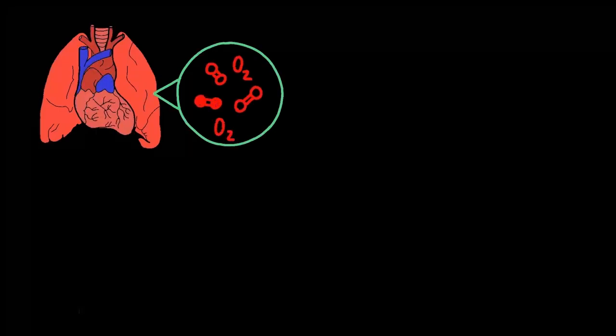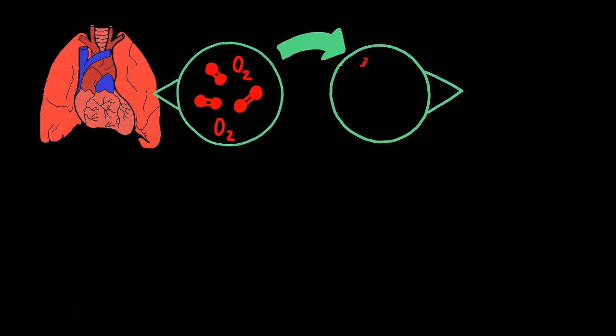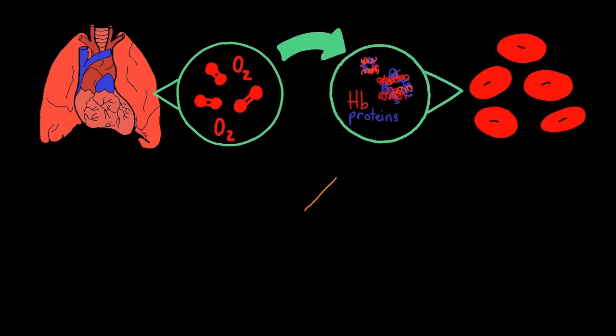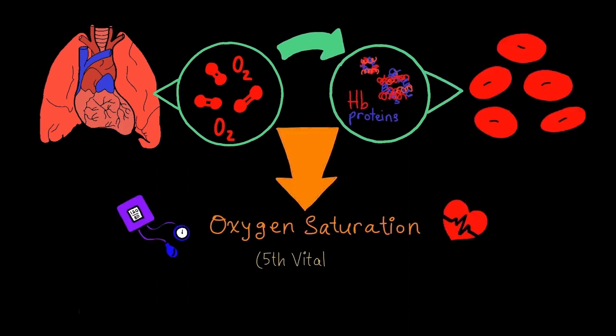When oxygen molecules travel from our lungs to our cells to oxygenate hemoglobin proteins in red blood cells, it influences our body's oxygen saturation, often called the fifth vital sign.